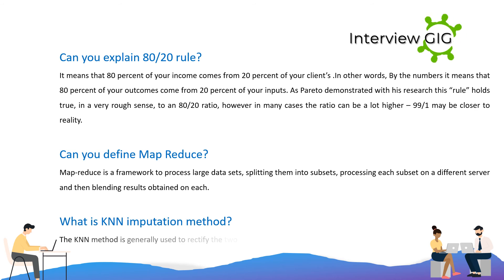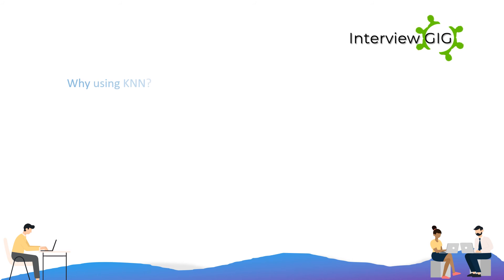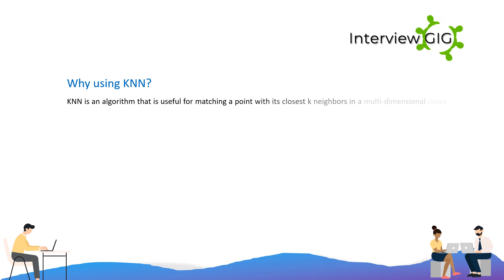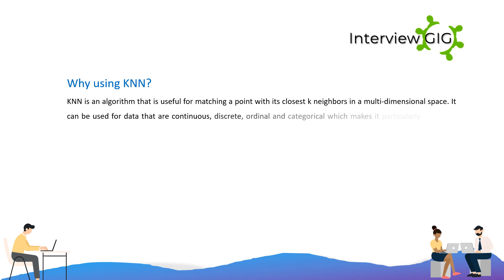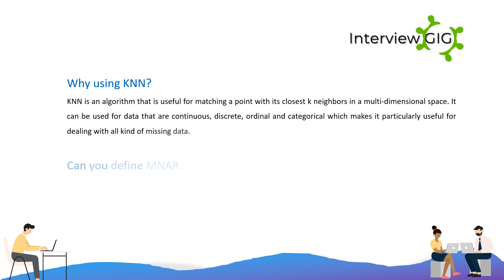What is the KNN imputation method? The KNN method is generally used to rectify two similar attributes or terms in a data sheet. KNN is an algorithm useful for matching a point with its closest K neighbors in a multi-dimensional space. It can be used for data that are continuous, discrete, ordinal, and categorical, which makes it particularly useful for dealing with all kinds of missing data.